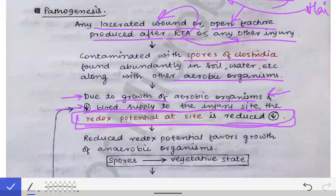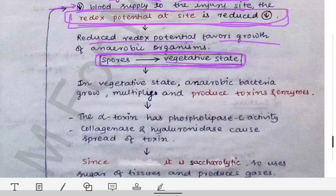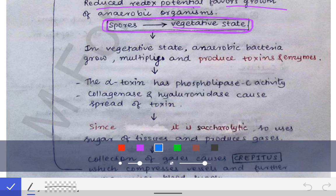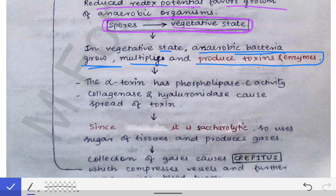This reduced redox potential is critical, because anaerobic organisms cannot grow in the presence of oxygen — the low-oxygen, low-redox environment favors their growth. The spores now convert into their vegetative state. Once in the vegetative state, they begin to grow, multiply, and produce toxins and enzymes.